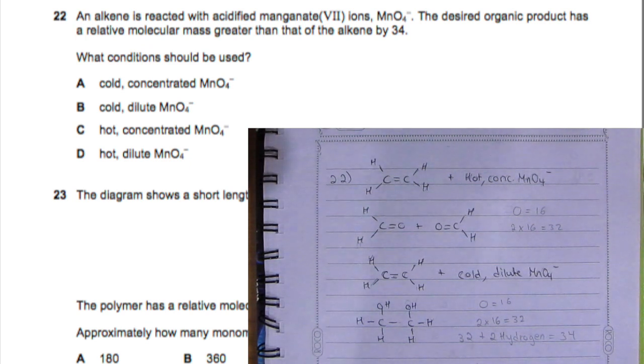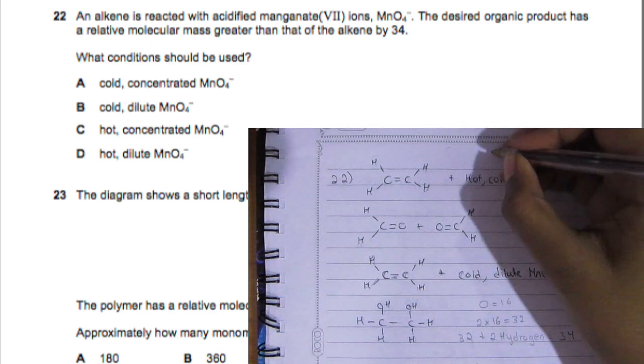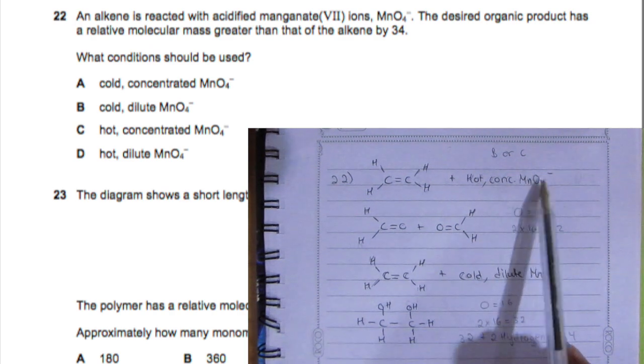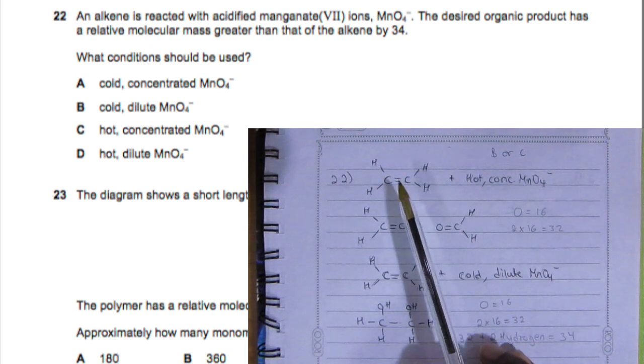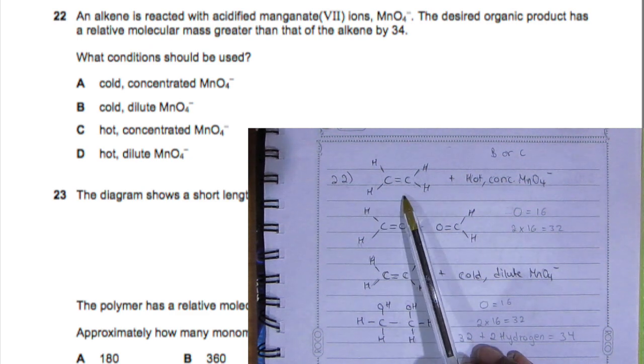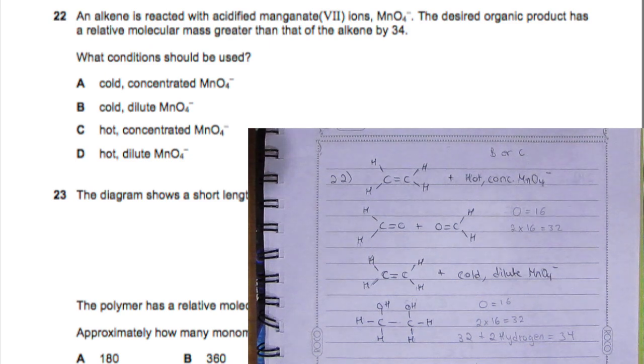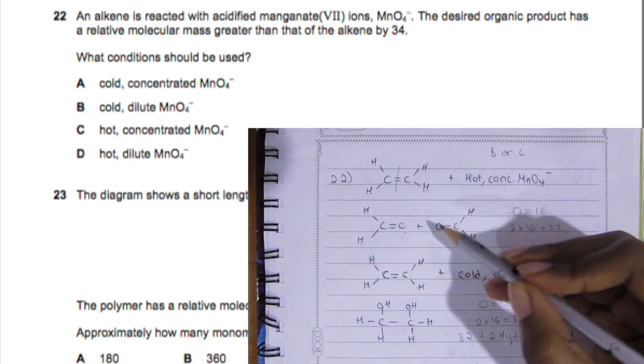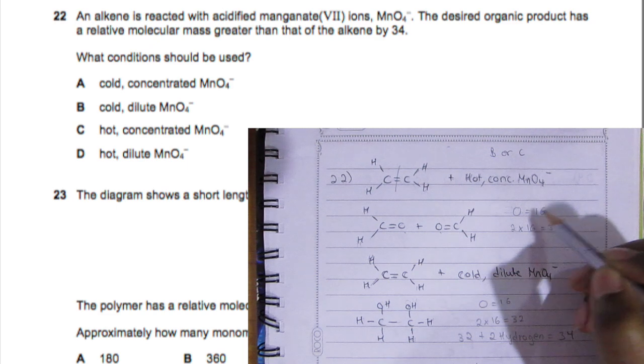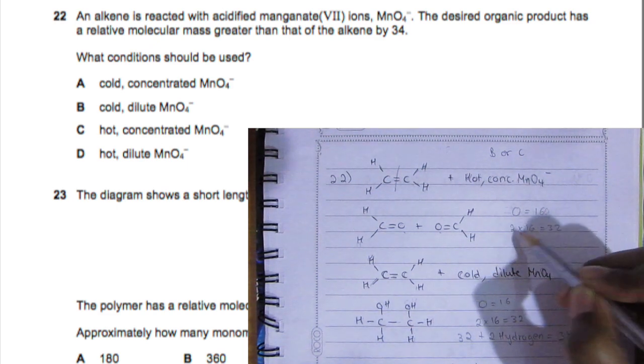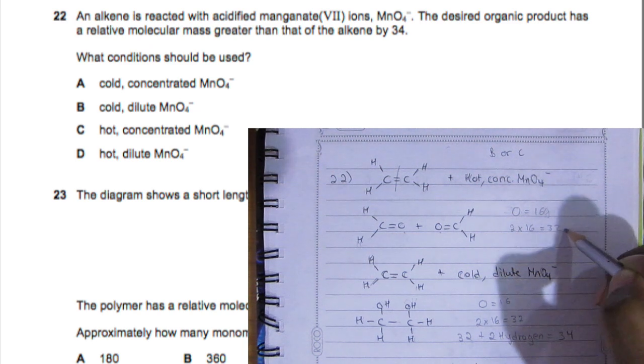We don't take hot dilute or cold concentrated, so either B or C. When we have the hot concentrated MnO4 minus, I just used this alkene as an example. You get this - it splits in the center and you get an oxygen here and oxygen here. So an oxygen is 16 grams, so if you have two oxygens it's a total of 32, so it gained mass by 32.